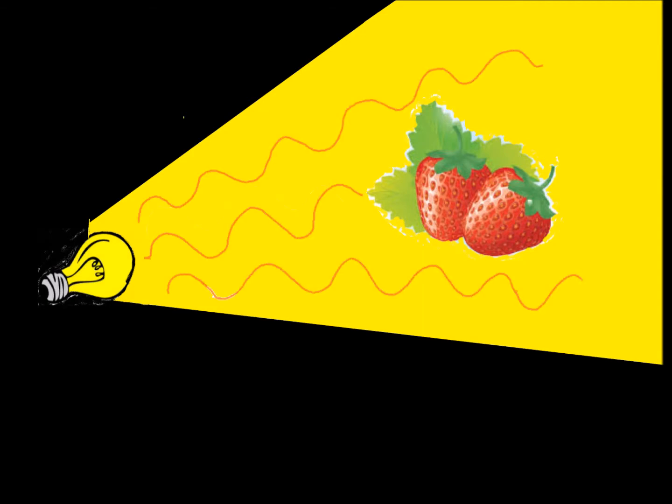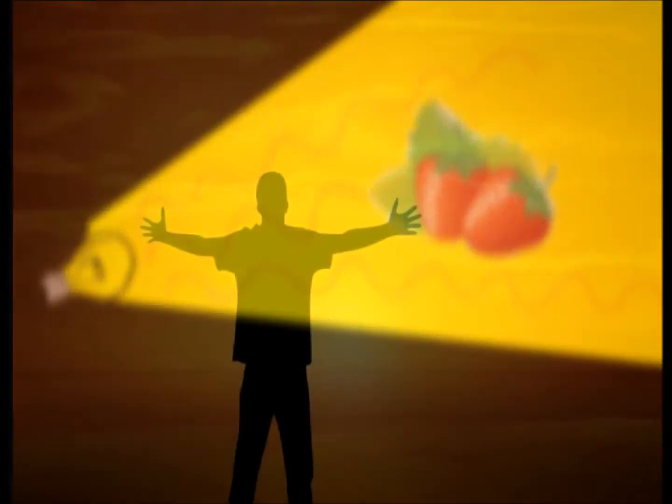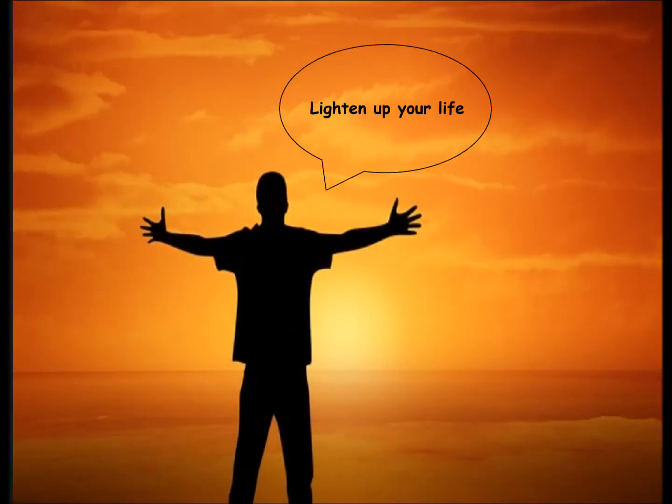Light waves are electromagnetic waves, visible to the human eyes and make all things visible. So how do we see things using light?